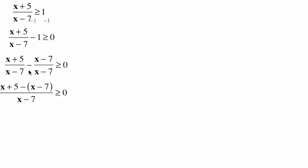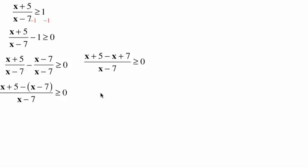I'm going to subtract the tops and keep the bottoms. So I have x plus 5 minus x minus 7. The negative is going to come in, change the x to a negative, change the 7 to a positive, and then I add like terms. The x and the minus x cancel and become 0, and we're left with 12 on the top.